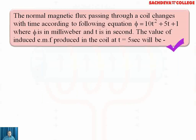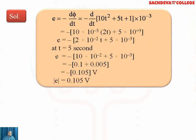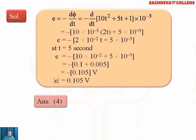The normal magnetic flux passing through a coil changes with time according to φ = 10T² + 5T + 1, where φ is in milliWebers and T is in seconds. The value of induced EMF at T = 5 seconds is required. Again combining Faraday's and Lenz's laws, E = −dφ/dt. Taking the derivative: 20T + 5, multiplied by 10⁻³. Putting T = 5 gives the result as 0.105 volts. The answer is the fourth option.